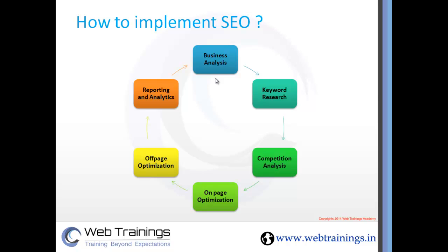Then we do competition analysis for the keywords. SEO is a challenging industry with huge competition, so we analyze whether it's possible to rank for a given keyword and how difficult it is. We look at what other websites are ranking, their overall value, their age, their authority, their page rank, and their on-page and off-page elements. This determines the difficulty level of the keyword.